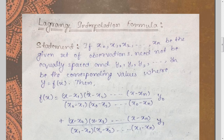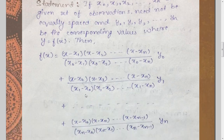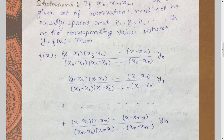Let y be the corresponding values for this set of observations. Then the Lagrange interpolation formula is given by the expression f(x), and here you can see it has a pattern. The first term is for y₀, and for y₀ the x₀ is absent on the top — we have started from x minus x₁, not x minus x₀, and in the bottom we will have x₀.